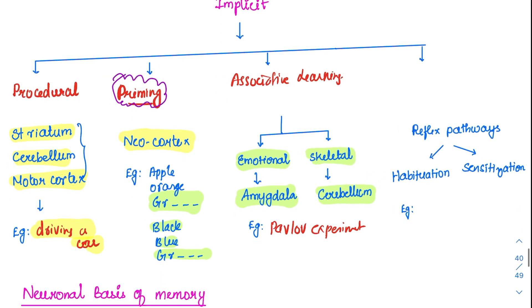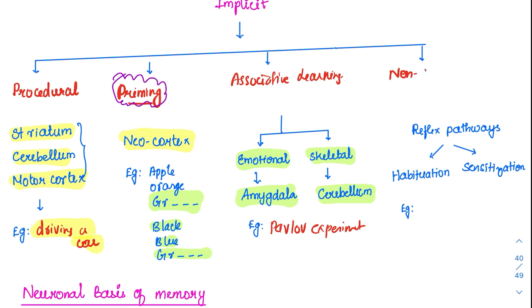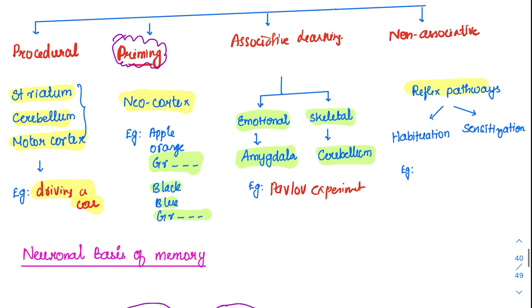The last type is called non-associative learning. Here we are not associating with anything but we are still learning. It is based on the reflex pathways and has two classifications. One is called habituation — don't think the person is getting habituated to a particular habit. Habituation means if you are constantly given a stimulus, you will try to pay less attention to it and get habituated to it.